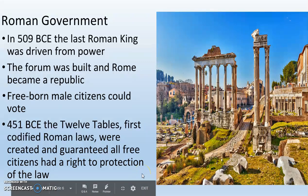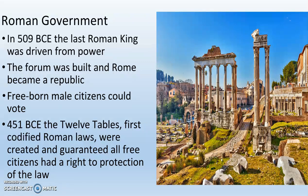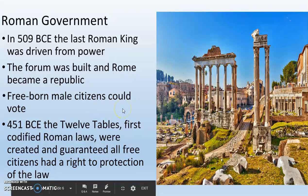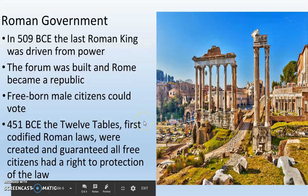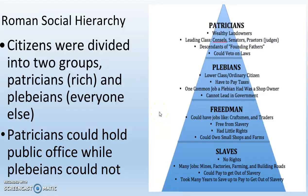When Rome the city was founded, it was actually a monarchy — it had a king. But that last king was driven from power in 509 BCE, and from there it becomes a republic. They build the Forum, which is where the senators meet. Specifically the rich, free-born male citizens vote for people who represent their interests and vote on laws — that's a republic. In 451 BCE, the 12 Tables are codified, the first codified Roman laws, and they guarantee all free citizens a right to protection of the law. This is a picture of the remains of the Roman Forum in the city of Rome.